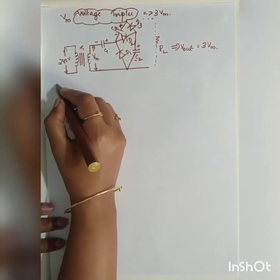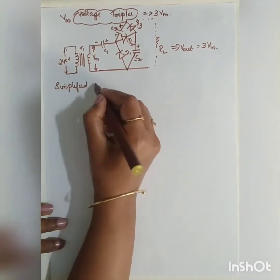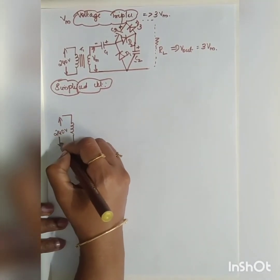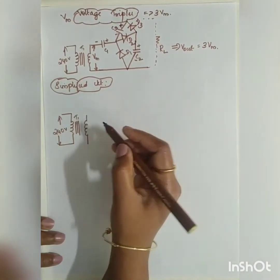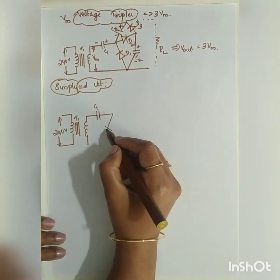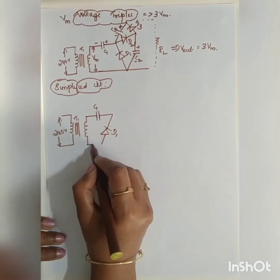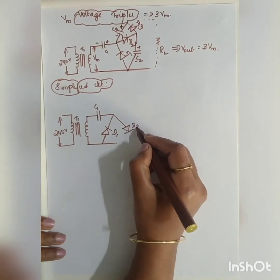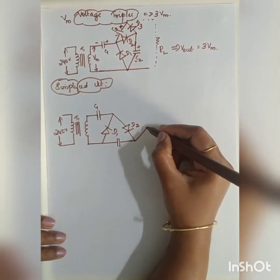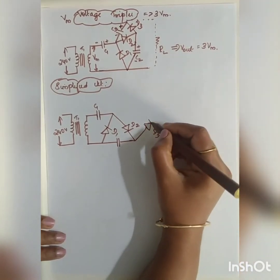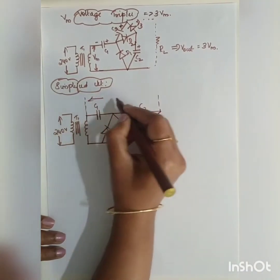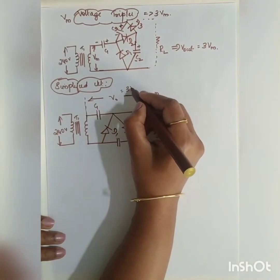Let me draw the simplified circuit for the voltage tripler. The input from the transformer secondary feeds into C1, then diode D1, then diode D2 with capacitor C2, then diode D3 with capacitor C3. Since capacitors C1 and C3 are in series, we take the output voltage across C1 and C3, which should be equal to 3Vm.